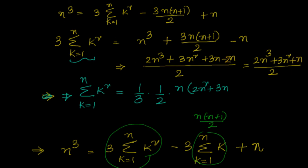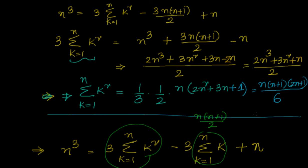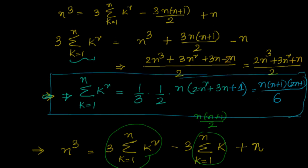We have 2n square plus 3n plus 1, which factors as (n+1)(2n+1). So sigma k square equals n(n+1)(2n+1)/6. You can verify: (n+1)(2n+1) gives 2n square plus 3n plus 1, which checks out. There was a small arithmetic correction along the way — minus 2n was missed earlier but has been fixed.